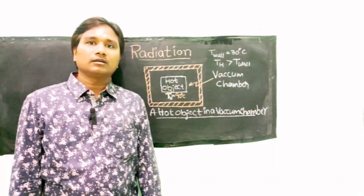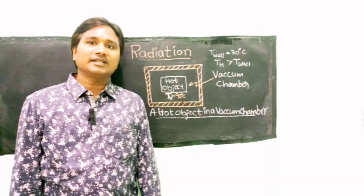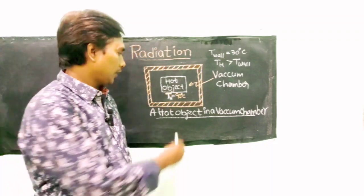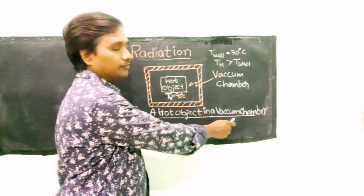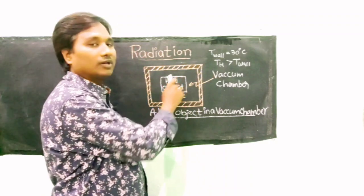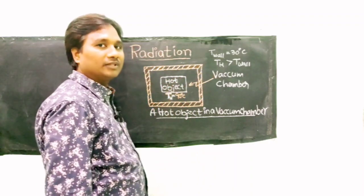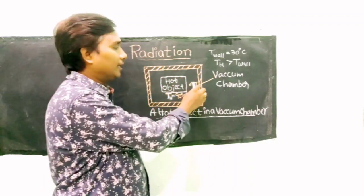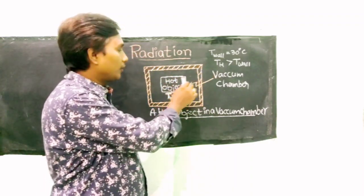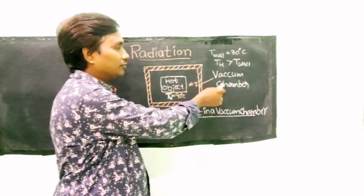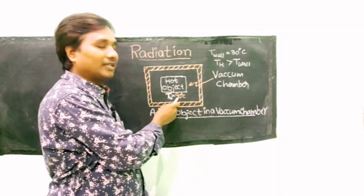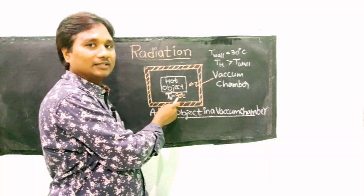Radiation is explained with a simple example of a hot object in a vacuum chamber. A vacuum chamber is an evacuated space where all the air has been removed. A hot object is suspended in a vacuum chamber, and this hot object's initial temperature is 90 degrees Celsius.